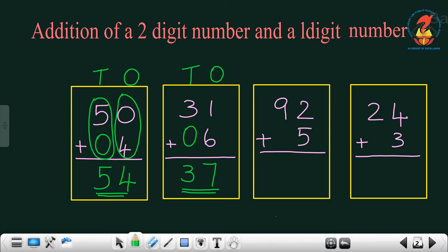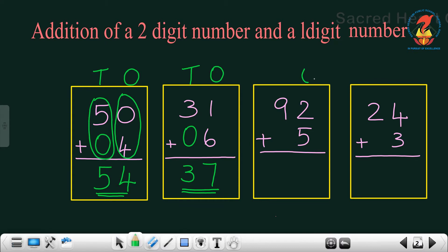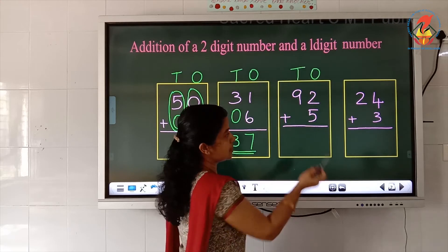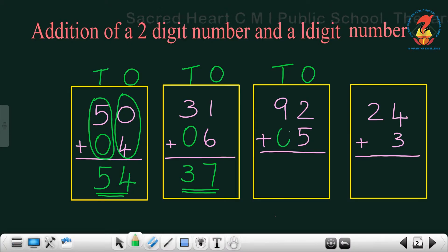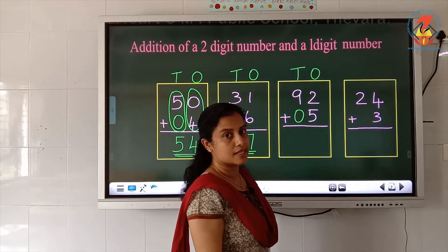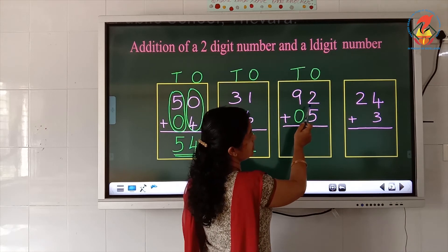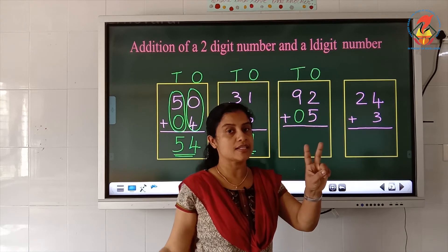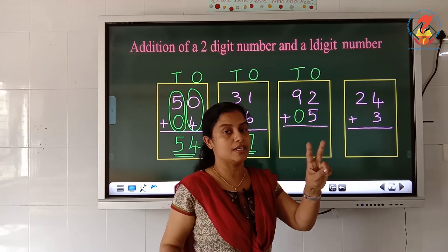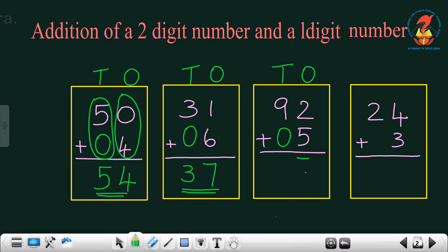92 plus 5. What is the first step? Write the place value. This is the ones place, this is the tens place. Is there any number here? There is no number, so we have to put 0. Then add the numbers in the ones place. Which are the numbers in the ones place? 2 and 5. How will you do 2 plus 5? 2 in the hand and 5 in the mind — after 5: 6, 7. Write 7 here.